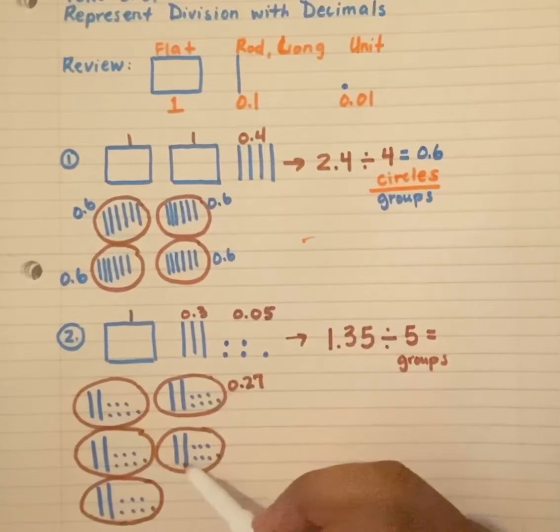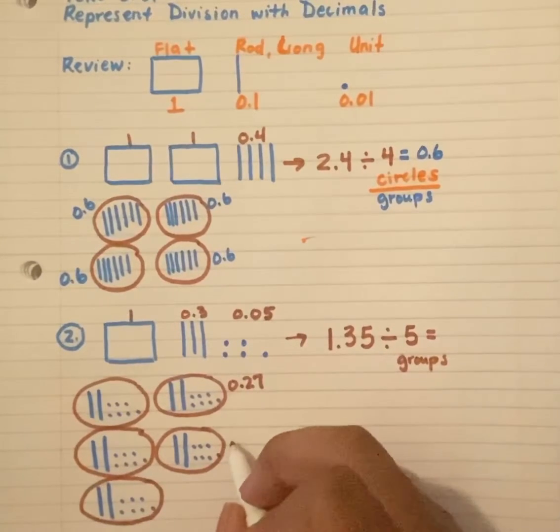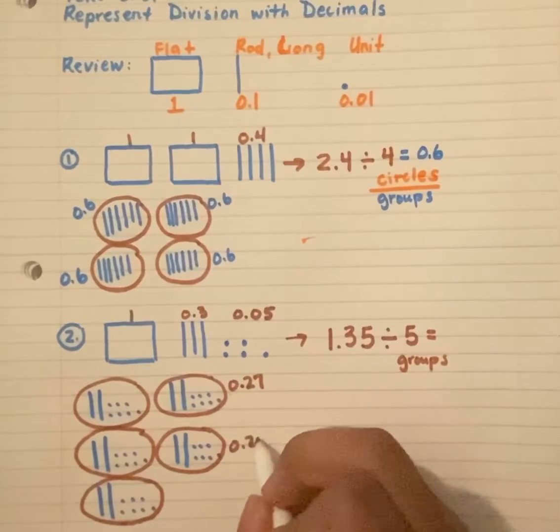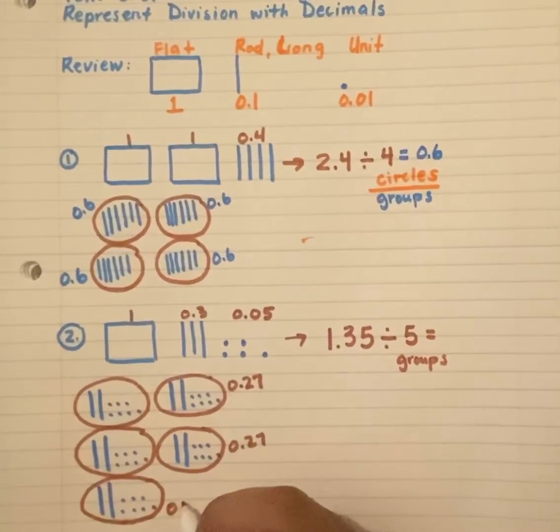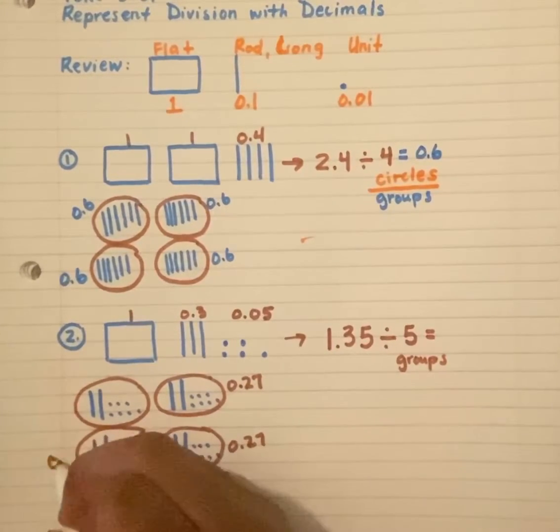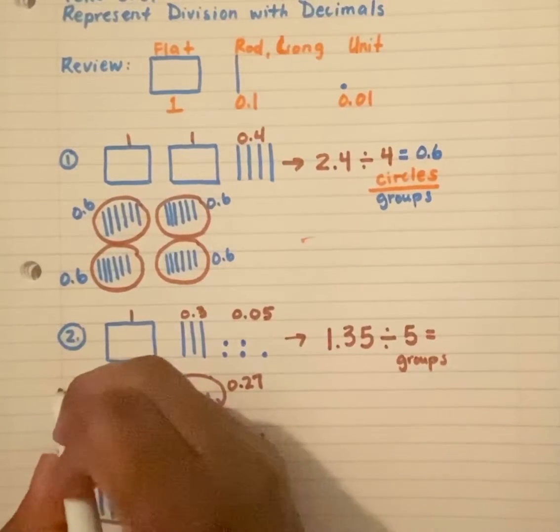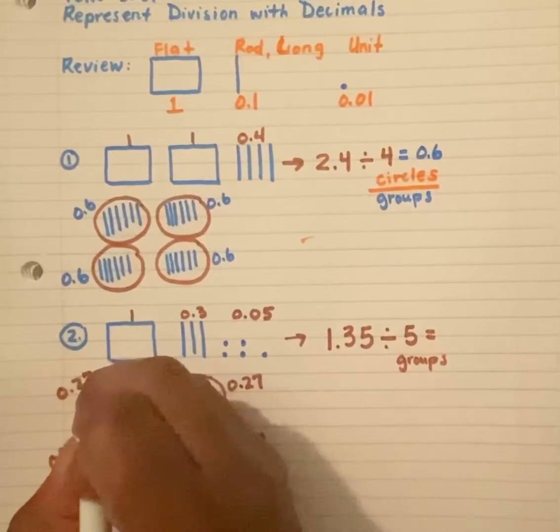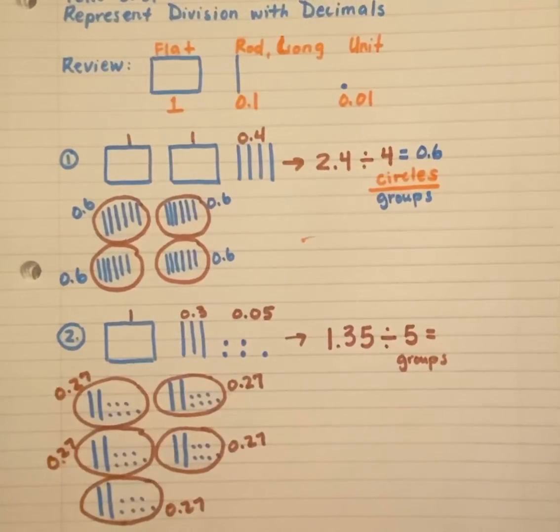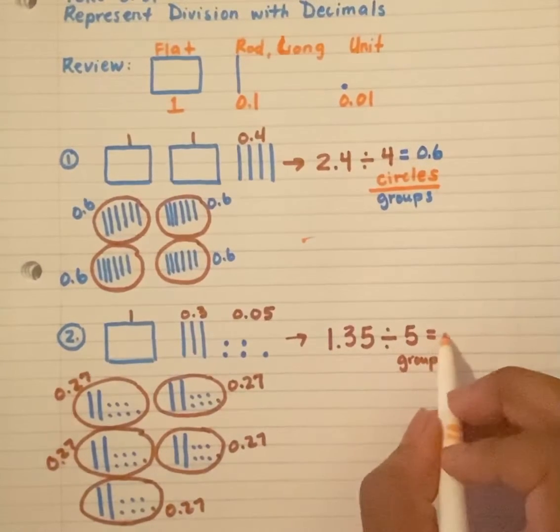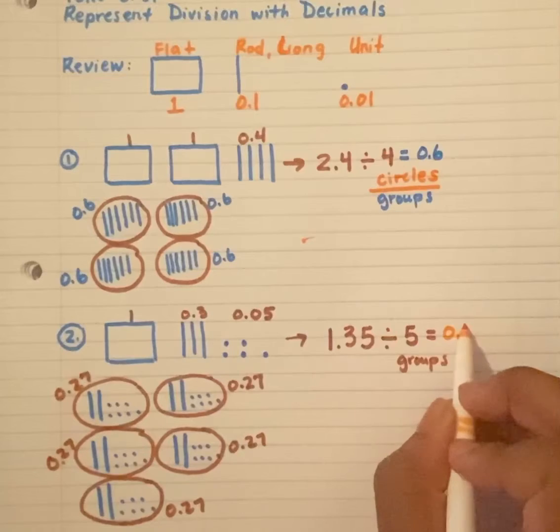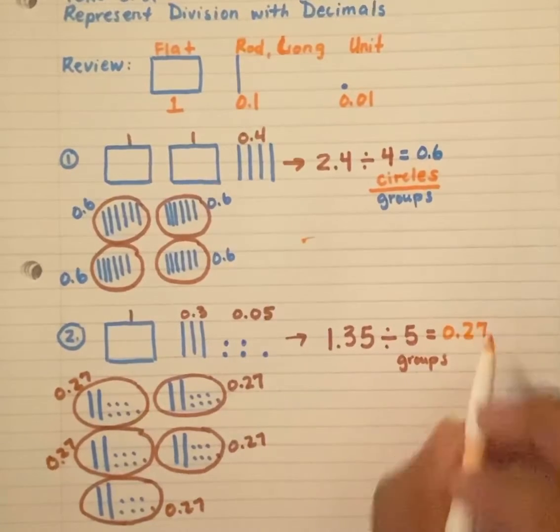Let's count the other ones. One, two. That's twenty cents. Twenty-one, two, three, four, five, six, seven. So that means each group has twenty-seven hundredths on the inside. What's our answer? Correct. Our answer is zero and twenty-seven hundredths.